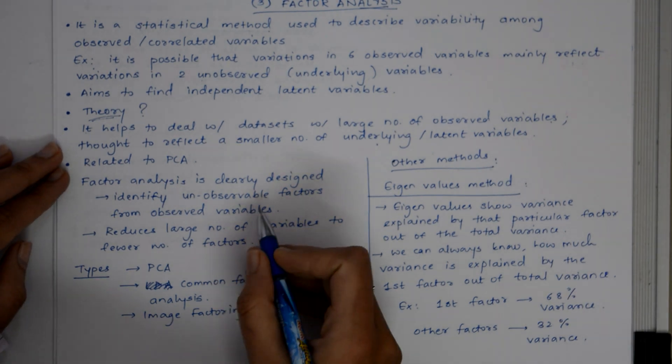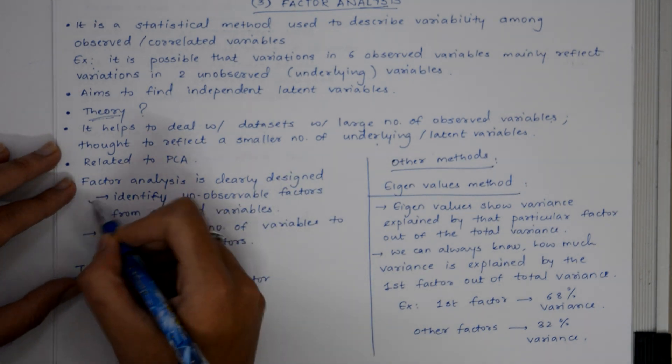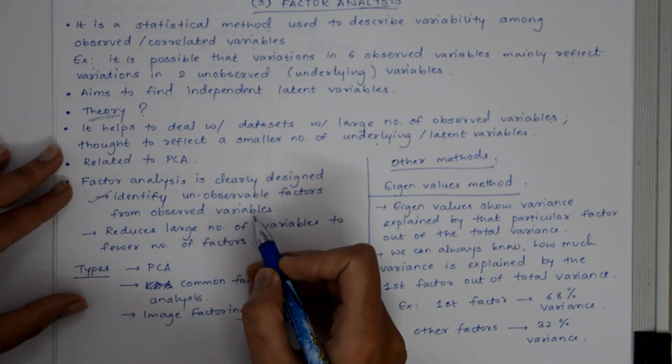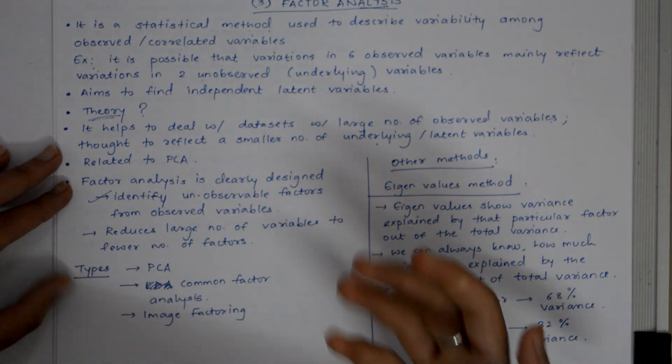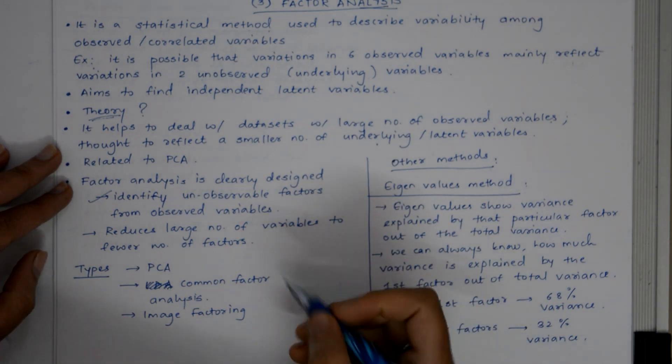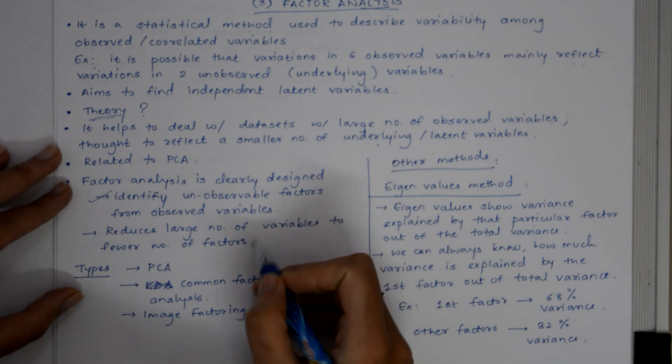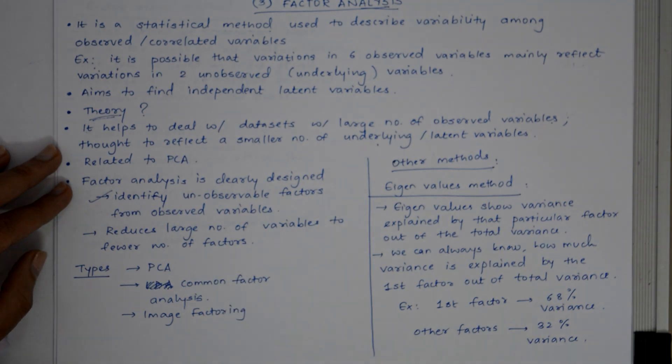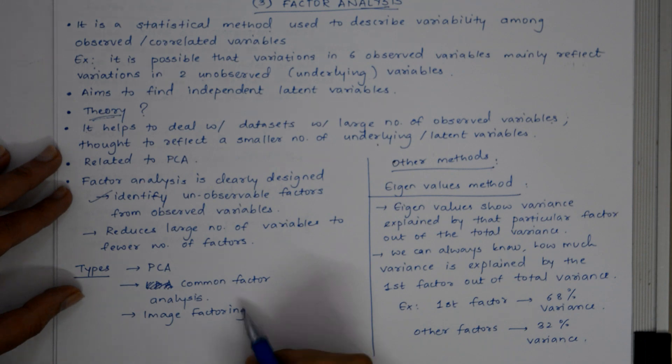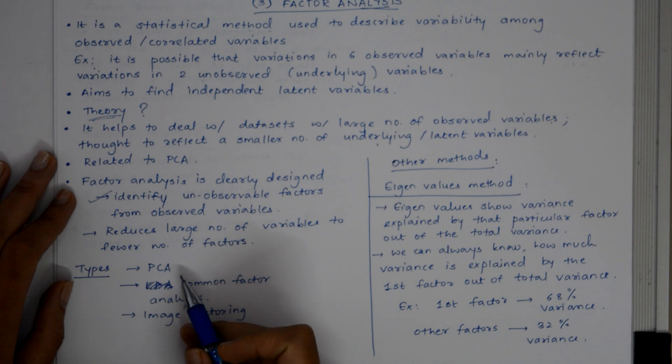Factor analysis is designed with the objective to identify unobservable factors from observed variables, whereas PCA does not directly address this objective. Factor analysis is a technique that reduces large numbers of variables to fewer factors. Types of factoring are PCA, common factor analysis, and image factoring. PCA is the most common method used.